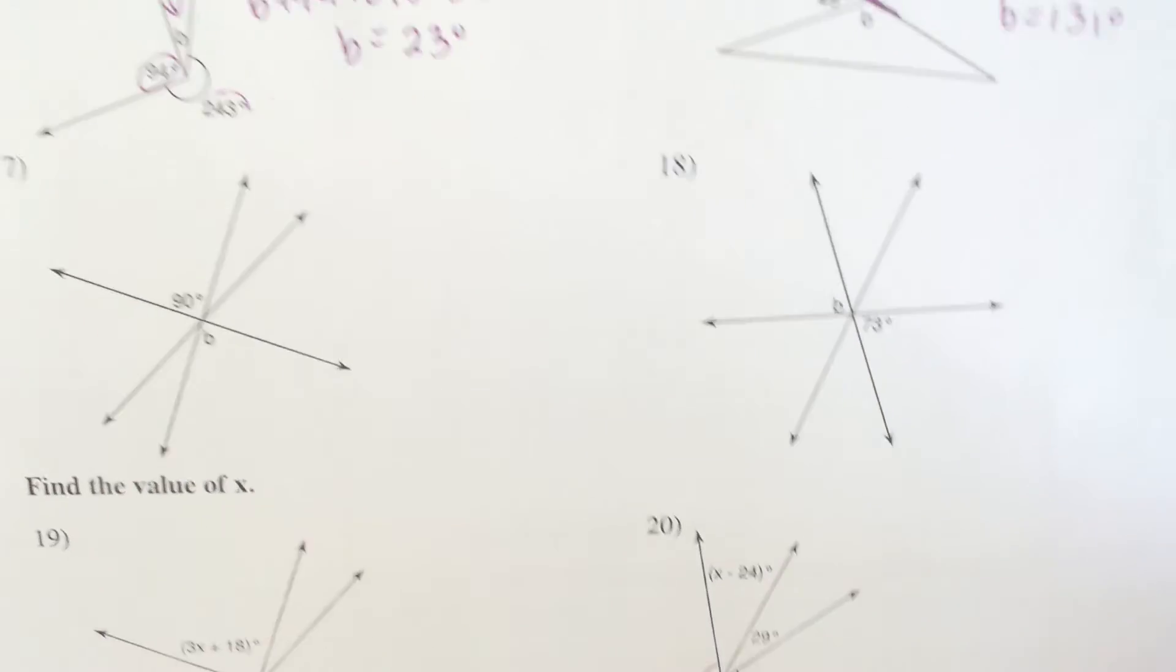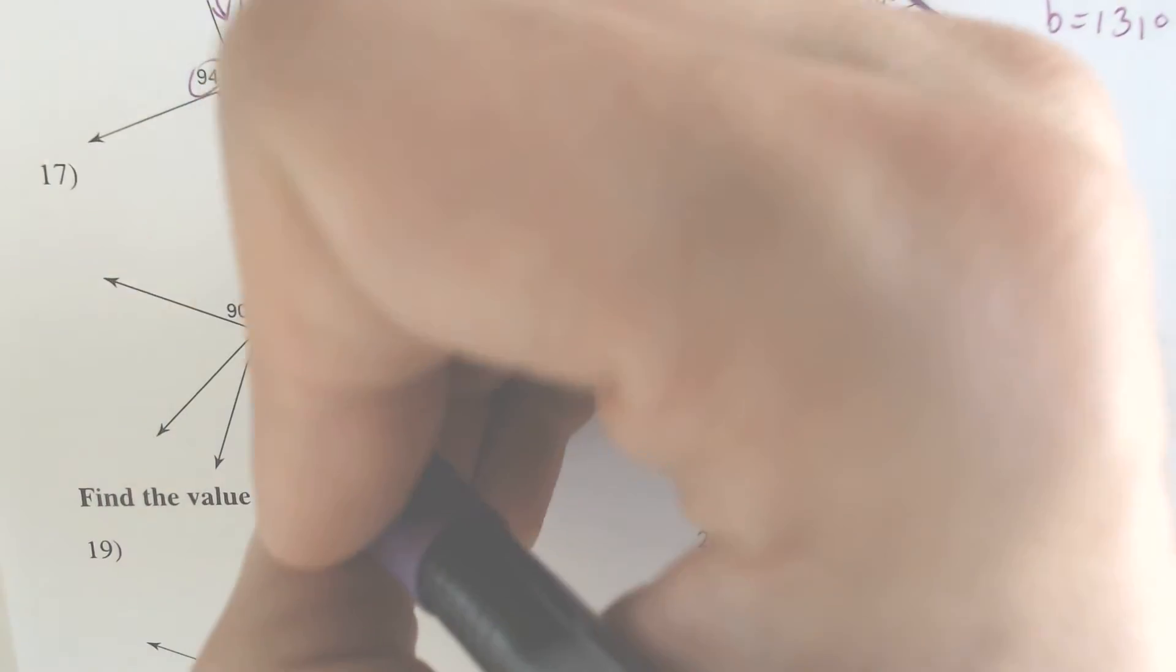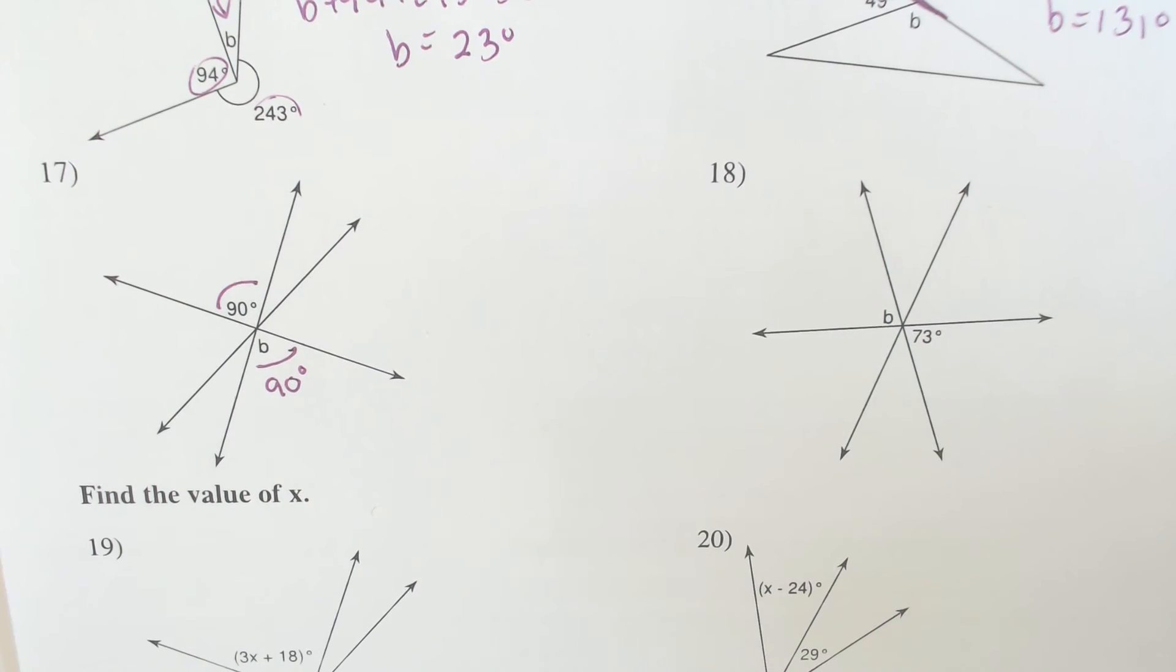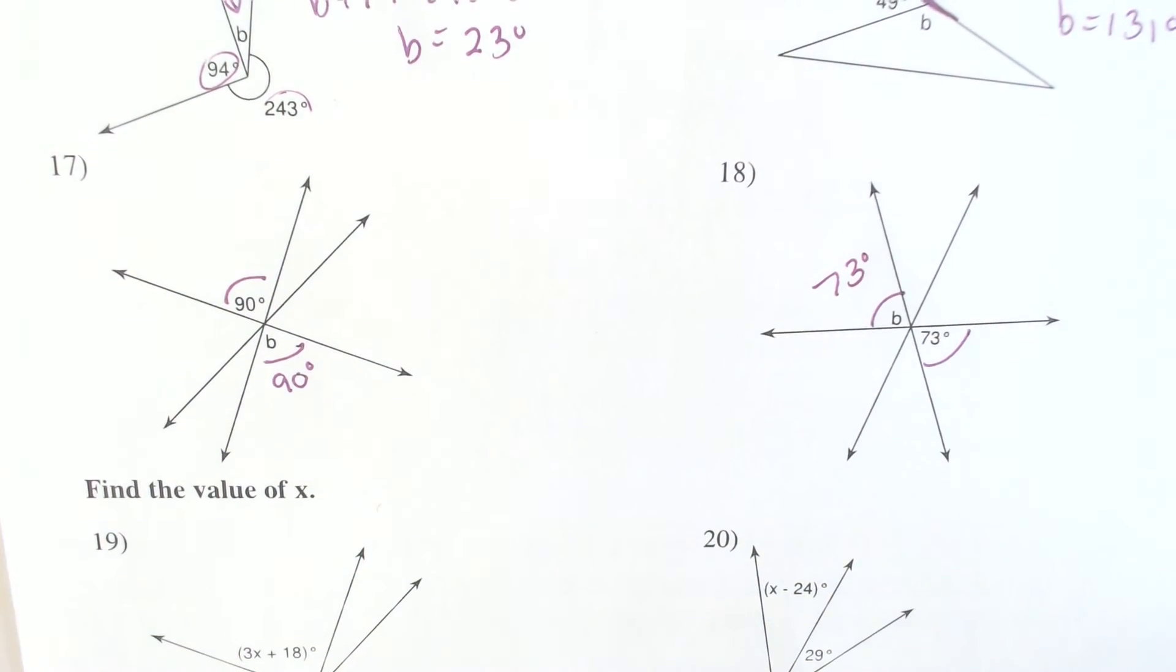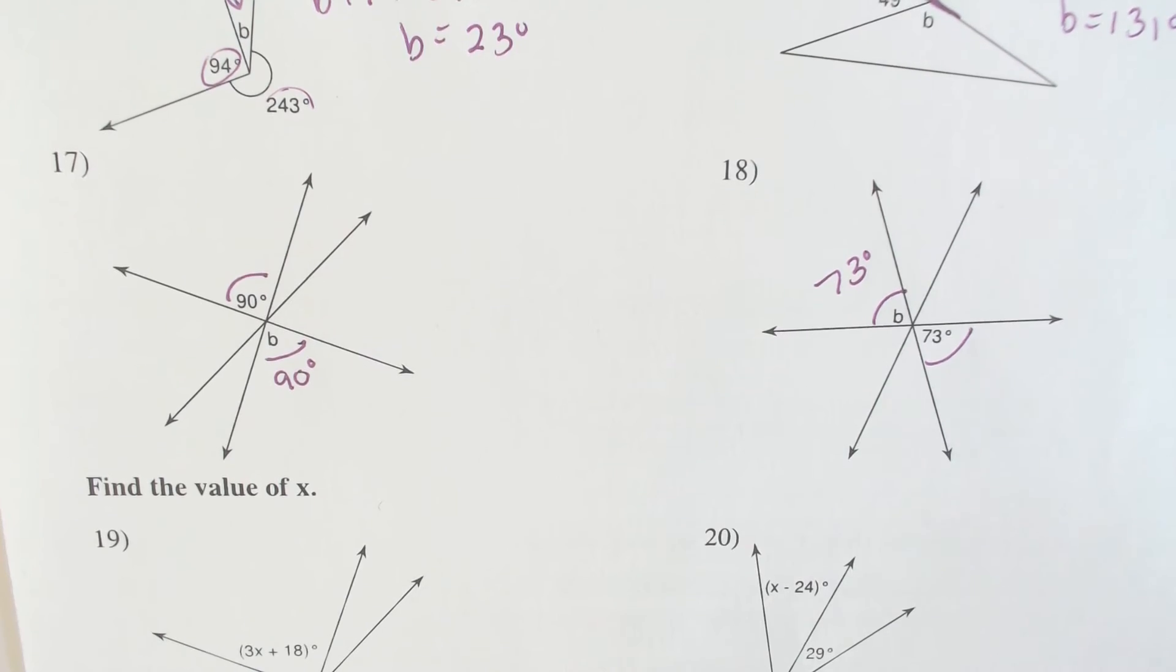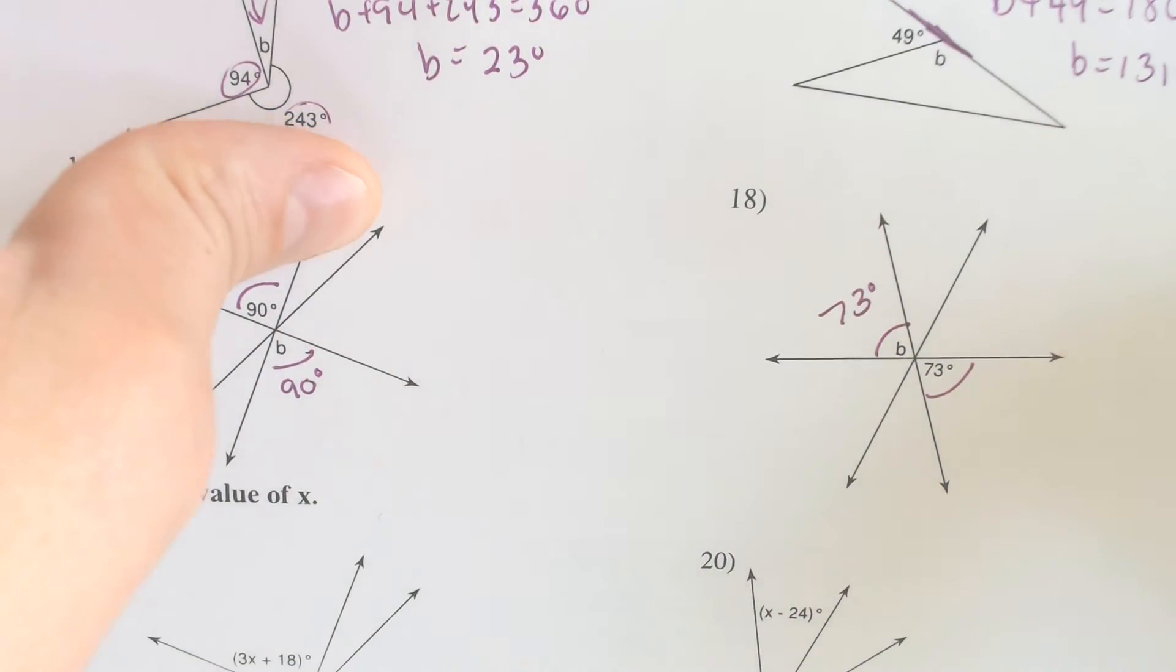Finishing it off with some easy ones and then we get some equations. So vertical angles are your friend. This is 90 degrees because it is across from the vertical angle. Vertical angles are your friend. This is across from the 73 and therefore angle B is 73.